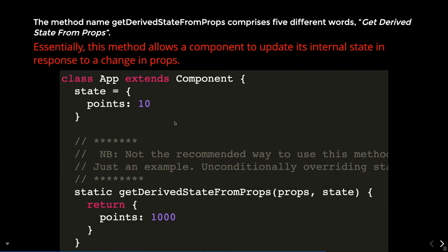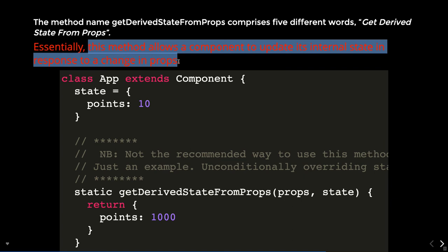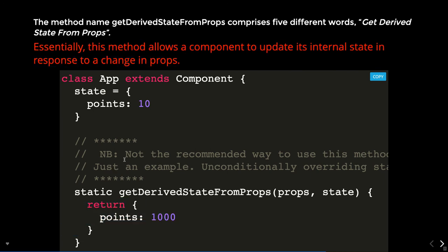getDerivedStateFromProps allows a component to update its internal state in response to a change in props. For example, if points was 10 and now it becomes 1000, this method lets you update internal state in response to that props change. You receive the new props, see the update happening, and return the new state — such as returning points as 1000. It is deriving the state from props, without necessarily doing a precondition check.